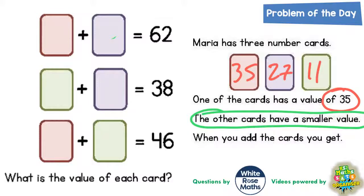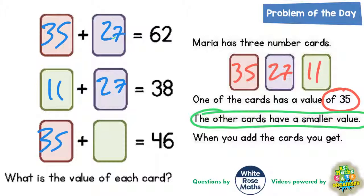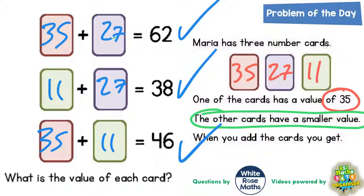So it still doesn't work if you make the green card start off being 35. So the only time it works is if the red card is 35, and then the purple card is 27, and then the green card is 11. And that's the only time that all three statements work out correctly. So there's your final answer.